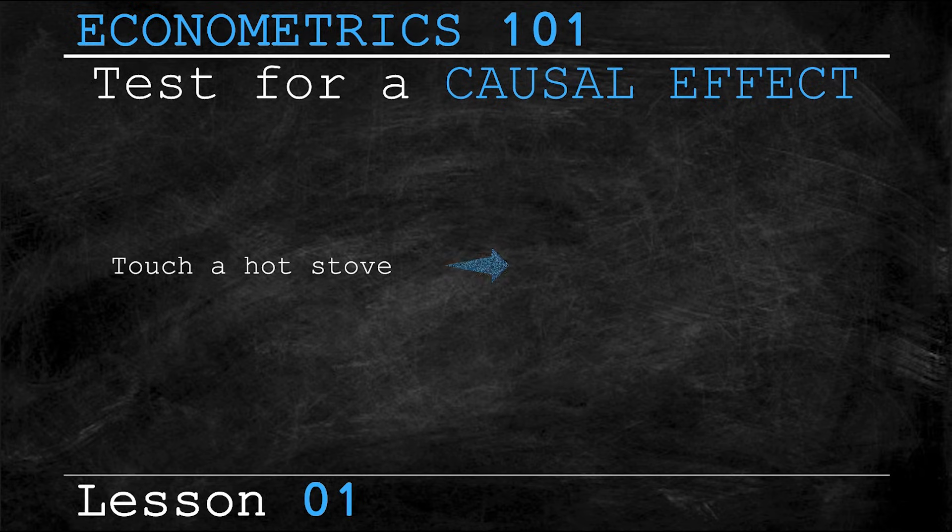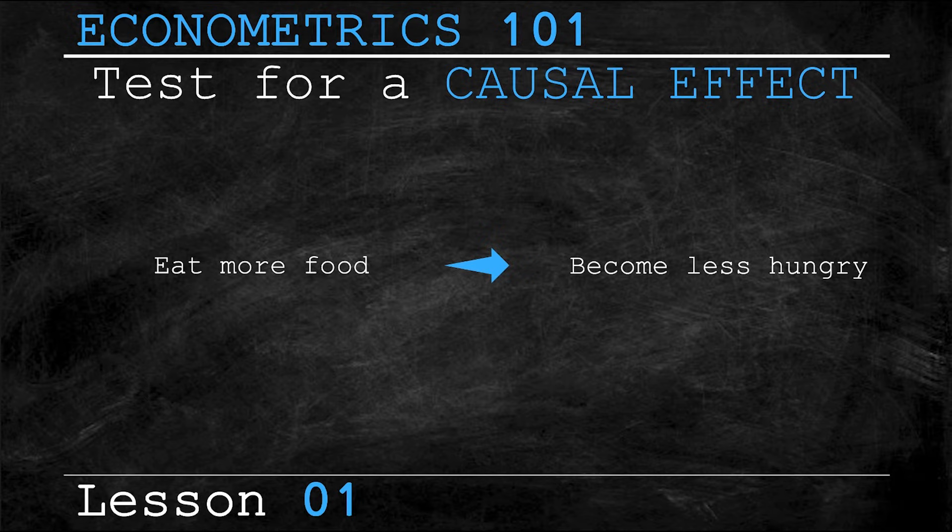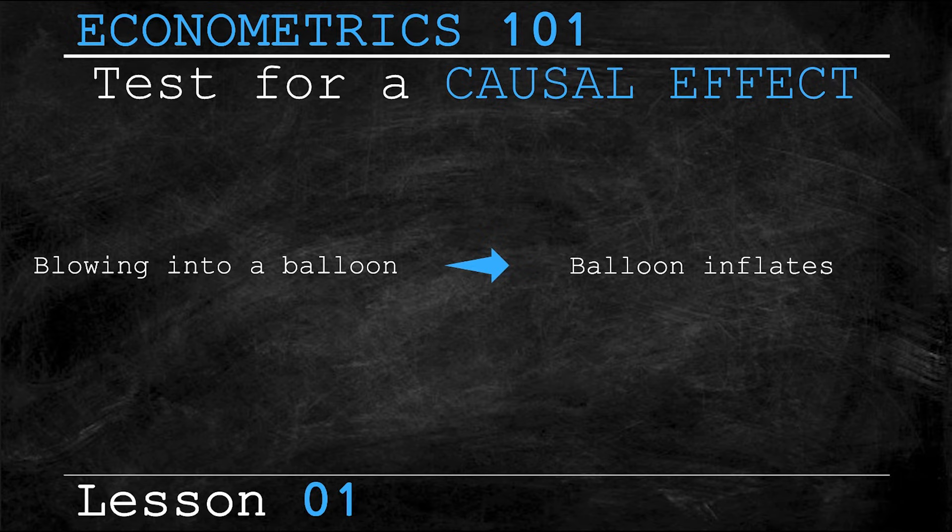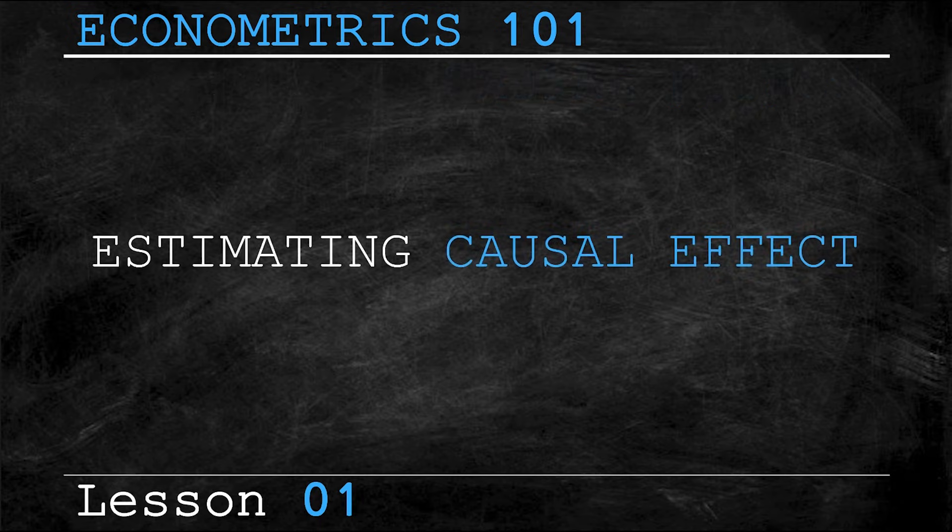Touching a hot stove will cause you to get burned. Eating more food will cause you to become less hungry. And lastly, blowing air into a balloon will cause the balloon to inflate. Well, in econometrics, it isn't enough to say that an action can cause an outcome. We want to quantify. This introduces us to a concept called estimating a causal effect.